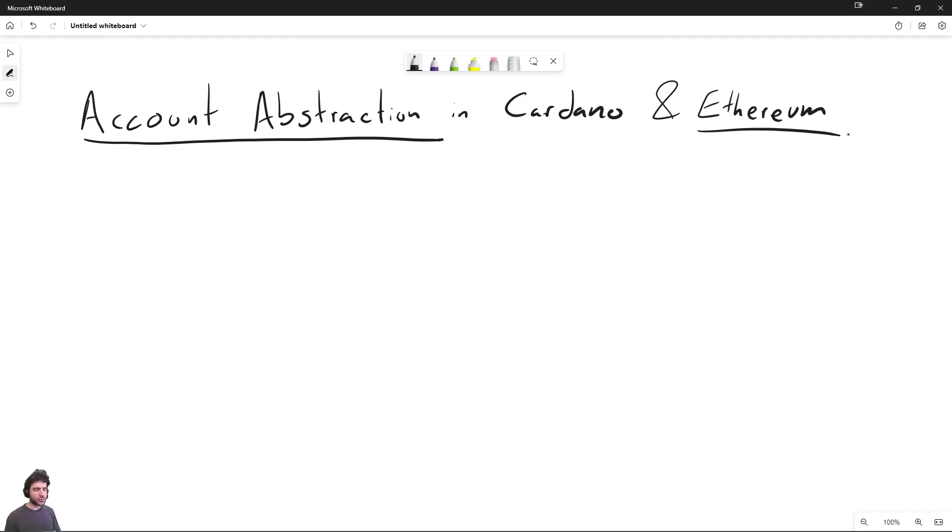First of all, what is account abstraction? One of the problems with blockchains right now is that smart contracts are often treated differently from regular user wallets. And this is not great. Why?